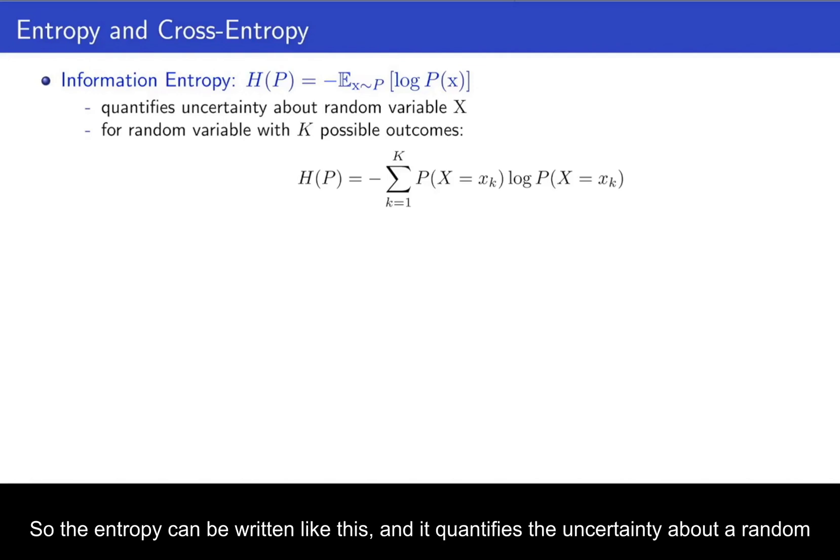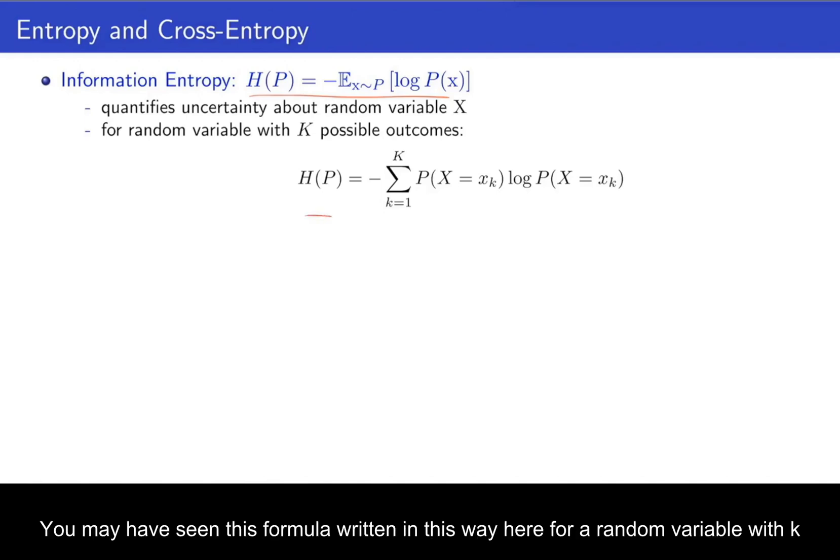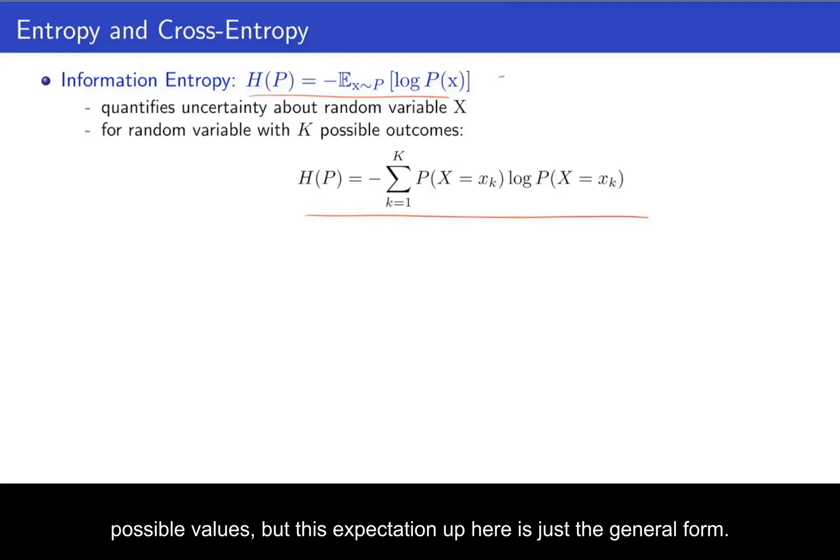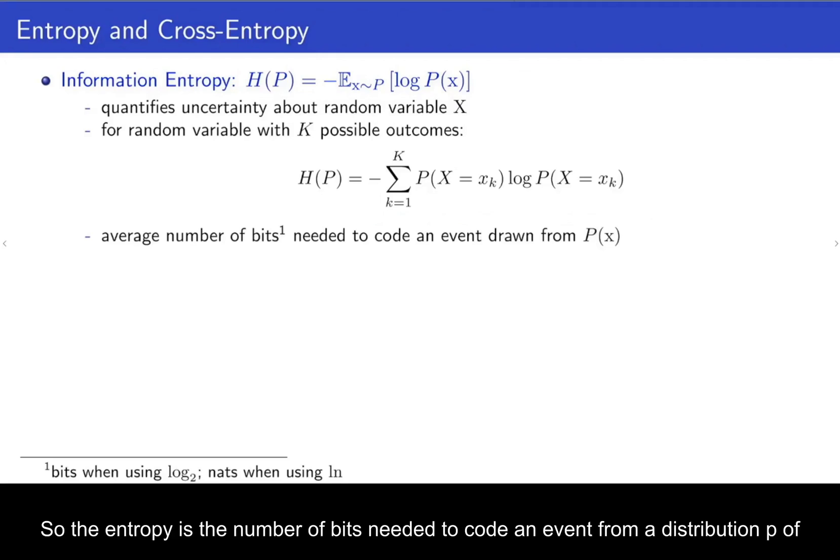The entropy can be written like this, and it quantifies the uncertainty about a random variable. You may have seen this formula written in this way here for a random variable with k possible values, but this expectation up here is just the general form.